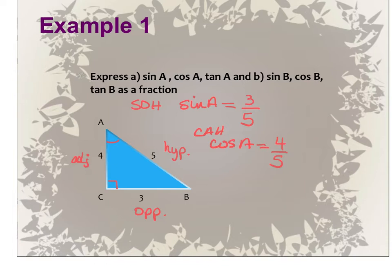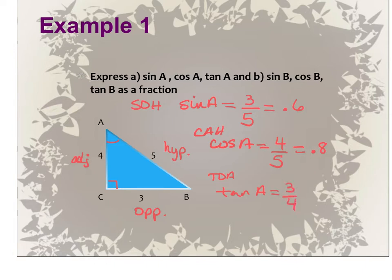If it asks for the decimal representation, you would divide 3 by 5, which is 0.6, and 4 by 5, which is 0.8. If it says to give 3 or 4 decimal places, these would have zeros and Canvas would cut them off, so you can just leave it as is. Then for TOA, that's the tangent — opposite over adjacent — which is 3/4, or 0.75.